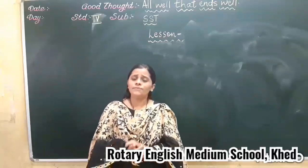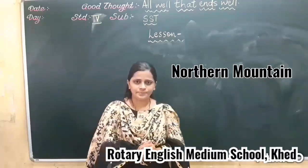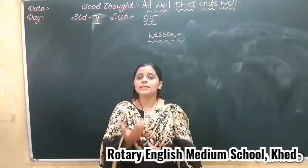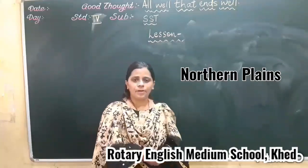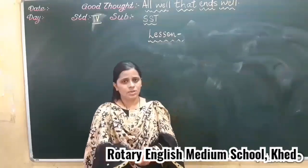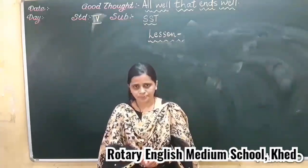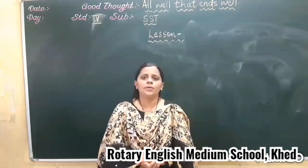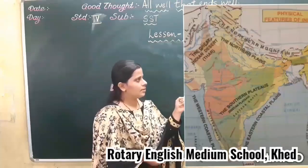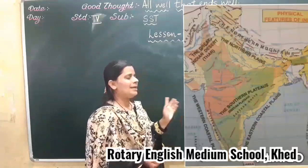My dear children, we have discussed the first physical division, that is northern mountain. We discussed chapter number one, that is northern mountain, then the second chapter, that is northern plains, and then the third chapter, that is northern Indian desert. These are the physical features of India. There are six physical divisions: northern mountain, northern plains, Indian desert, southern plateau, coastal plain, and island region.